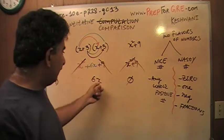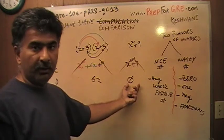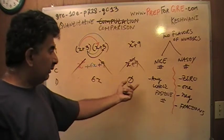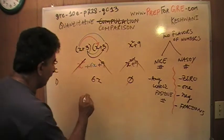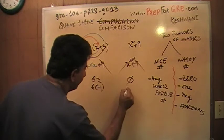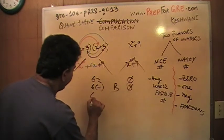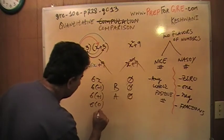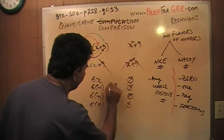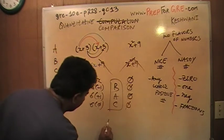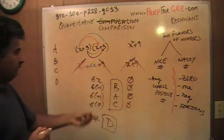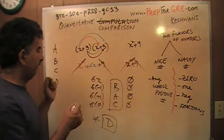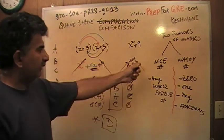If you jump to the conclusion that 6x must be more than 0, you're wrong — it depends on x. If x is negative, 6x is smaller and 0 is bigger, so the answer would be B. If x is positive, 6x is bigger, so the answer would be A. If x is 0, both quantities are equal, so the answer would be C. There are conflicting answers, therefore the correct answer is D. The x squared and 9 play no role — we're left with 6x versus 0.